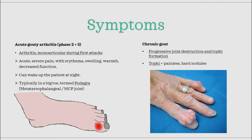Over time, as gout progresses to a more chronic stage, there will be more and more destruction of the joint and formation of tophi. Tophi are classically seen symptoms associated with gout. They are hard, painless nodules that form around the joint, and they can vary a lot in how they look and their size.